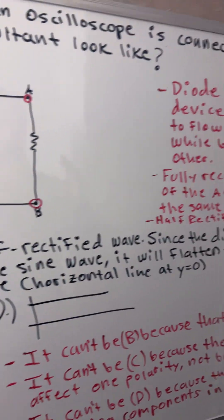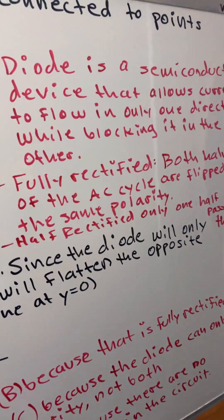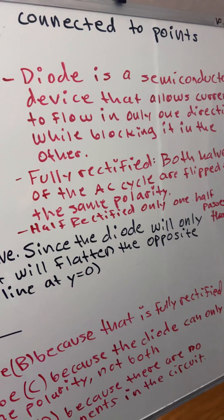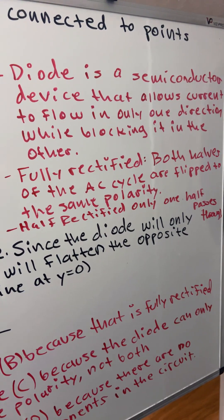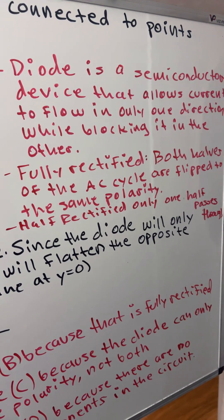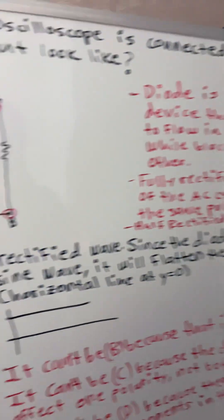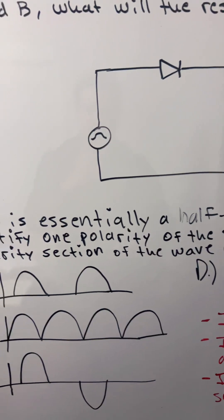So what is a diode? A diode is a semiconductor device that allows current to flow in only one direction while blocking it in the other.